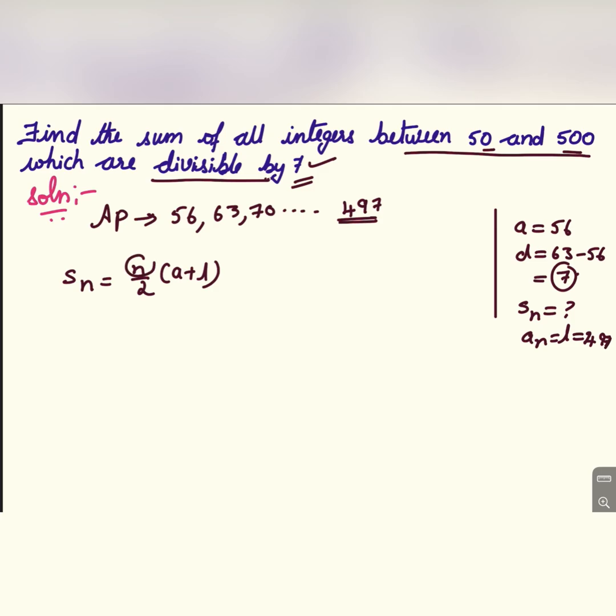Now in this we don't have n so we need to find out n. For that we have to use An formula. An is equal to a plus n minus 1 into d. Last term An is 497 is equal to a is 56 plus n, we have to find out my n minus 1 into d is 7.